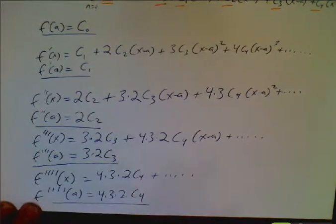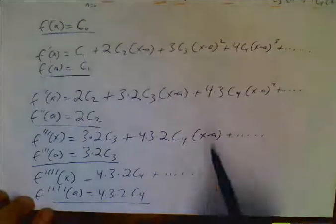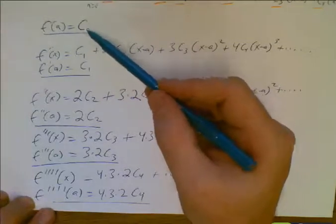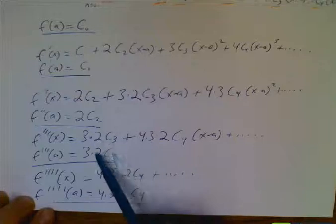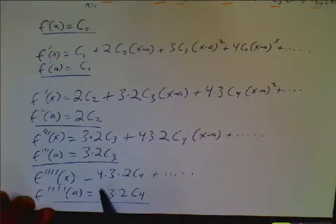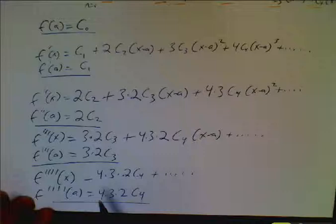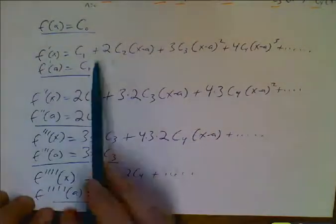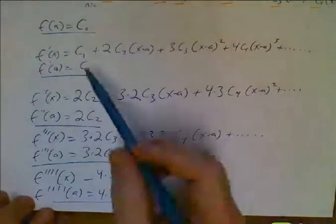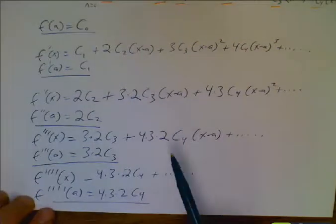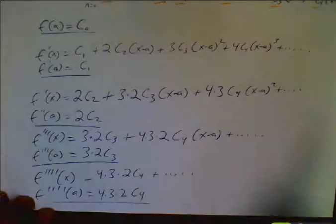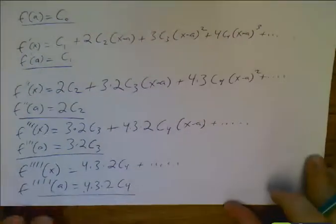And that takes care of your last, not last term, but the last one I think we need. Because look what we've got. We've got c sub zero, c sub one, two c two, three times two c three, four times three times two c four. You can almost imagine the next one's going to be five times four times three times two. And eventually you see that these are all factorials. These all come from the factorial. Now what factorial is it? Is it just n? Well, let's see.